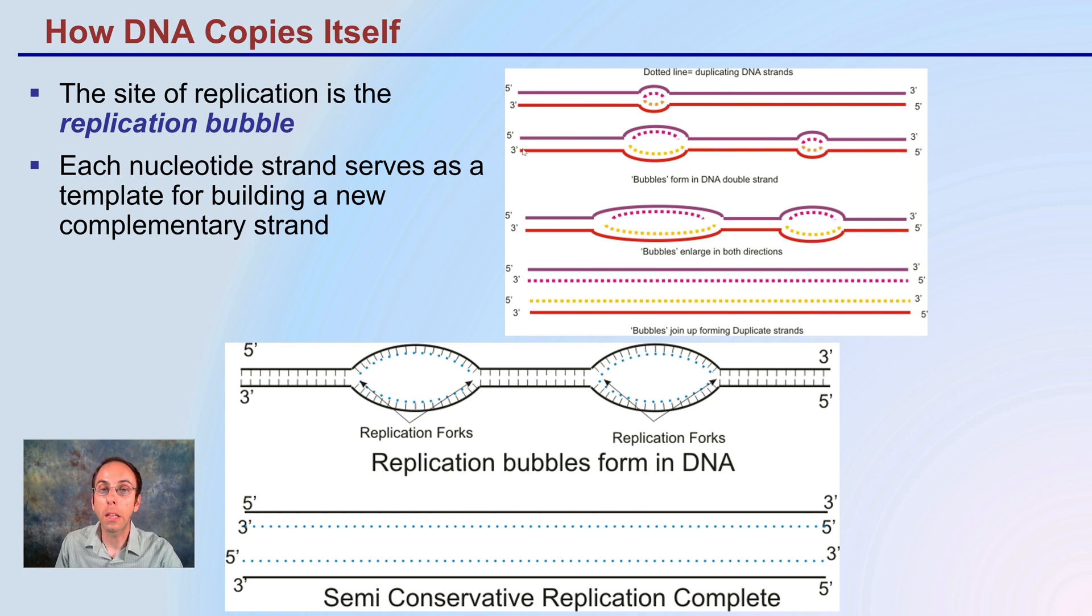This replication site does not just occur in one area. This may occur in many areas and in fact it does, particularly for eukaryotes. Each nucleotide strand serves as a template building for the new complementary strand. All these little bubbles will eventually meet creating a replication of the original form of DNA in a semi-conservative nature.